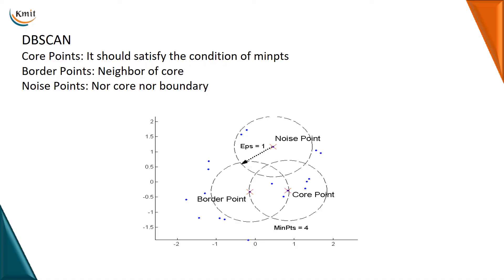Here, epsilon is one and minimum points is equal to four — a point must satisfy minimum equal to four to be a core point. If it does not satisfy the minimum point condition, then it is not a core point. The other points that are in the neighborhood are border points, and points not related to any cluster are noise points. You can see the diagrams illustrating what is a noise point, a border point, and a core point.